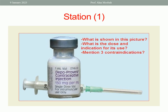Please look at this picture. What is shown in this picture? As you see, this is a vial containing Depo-medroxyprogesterone acetate 150 mg. So, what is the dose and the indication? 150 mg is given deep intramuscular every 3 months as a contraceptive.